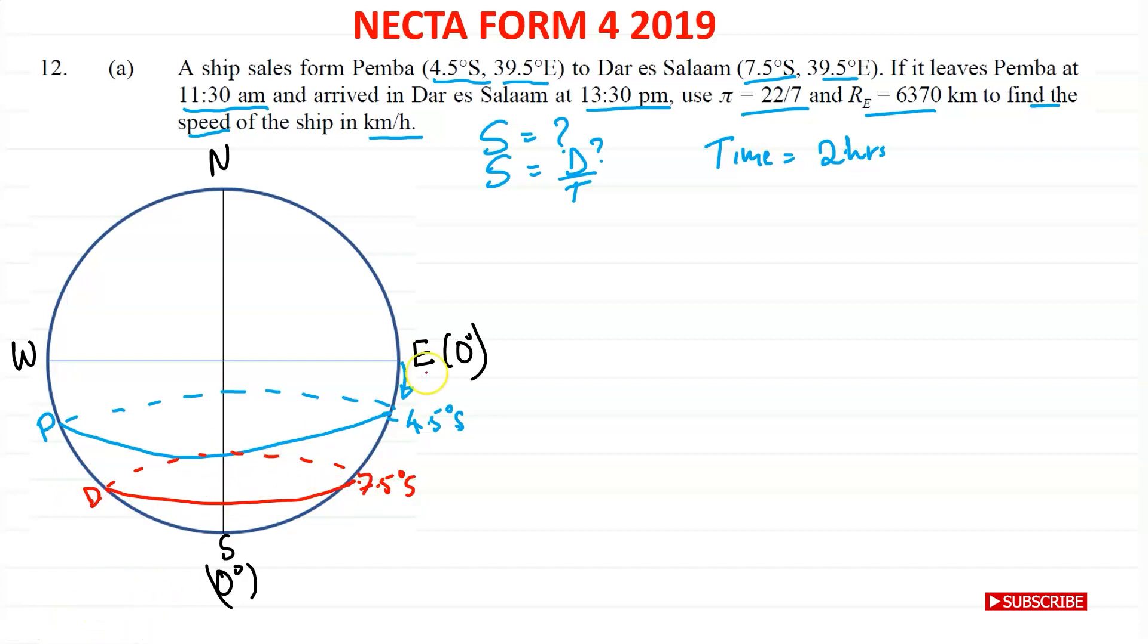And it traveled on the same longitude, which is 39.5 degrees east. So let's put that in green. East is on this side. So let's just say it's this one here. This is 39.5 degrees east. Okay, so this is where the journey started, Pemba. And this is where the journey ended, Dar es Salaam. So we need the distance from there to there.